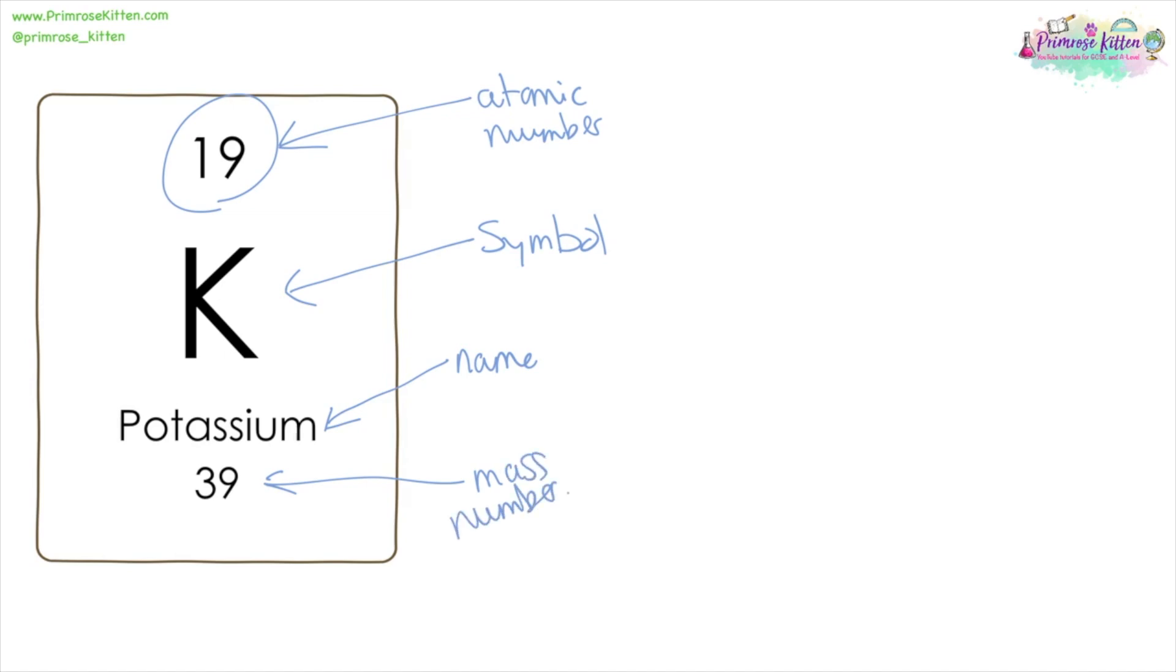Now for these, location doesn't matter. Different textbooks, different sheets are going to put them in different locations. The larger one is the mass number and the smaller one is the atomic number. The atomic number tells us the number of protons and the number of electrons in an atom. The mass number is the number of protons plus the number of neutrons.